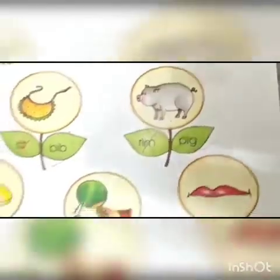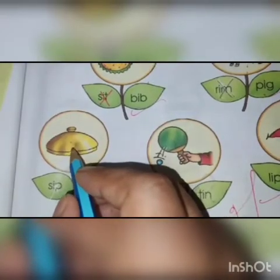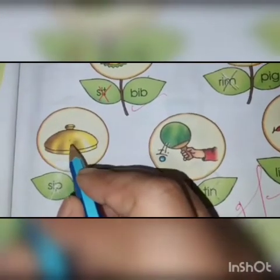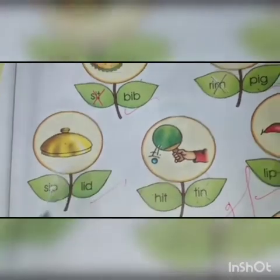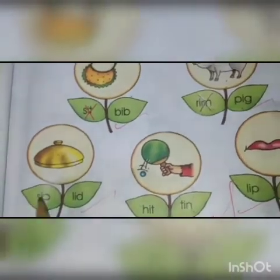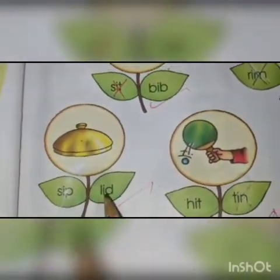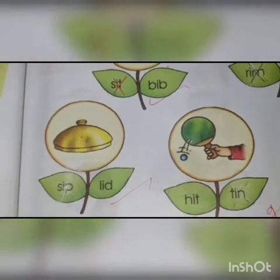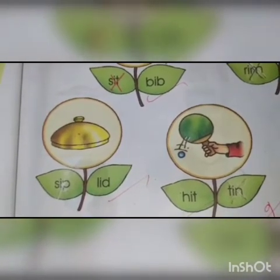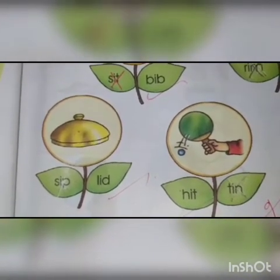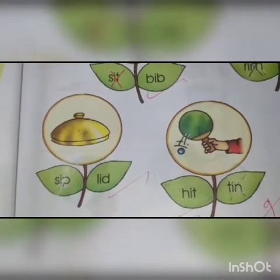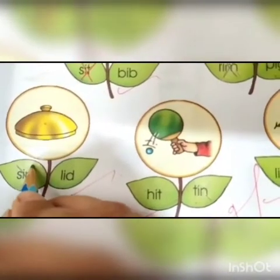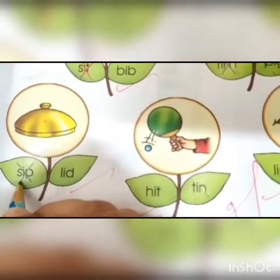Let's go to the next picture. Which picture is this? This is a lid. Now read the words given in the leaves: sip, lid. Which word does not belong to the picture? Sip. Very good. Now you will close the word sip.